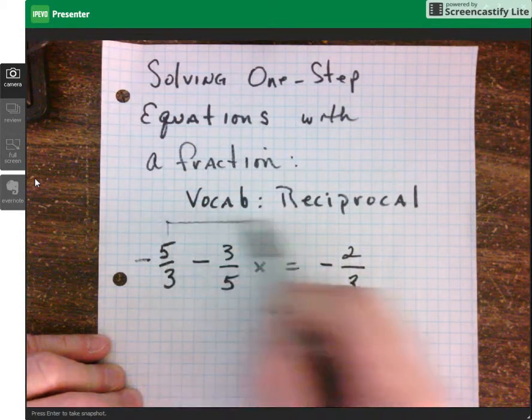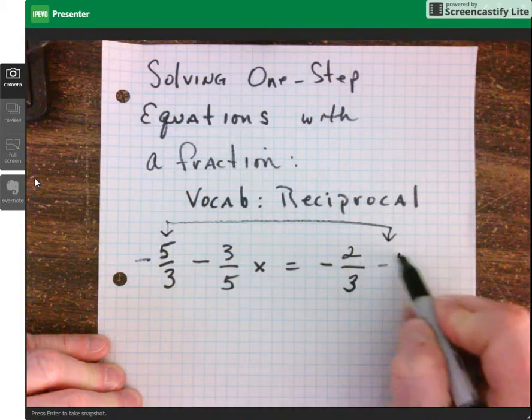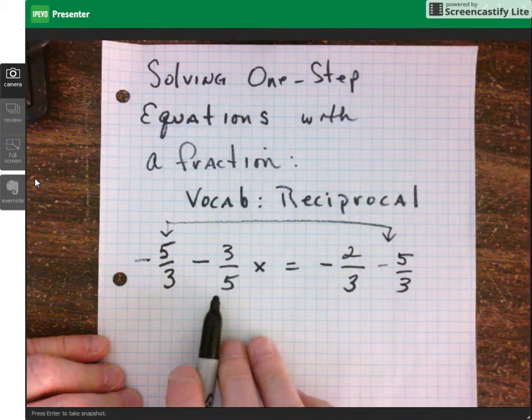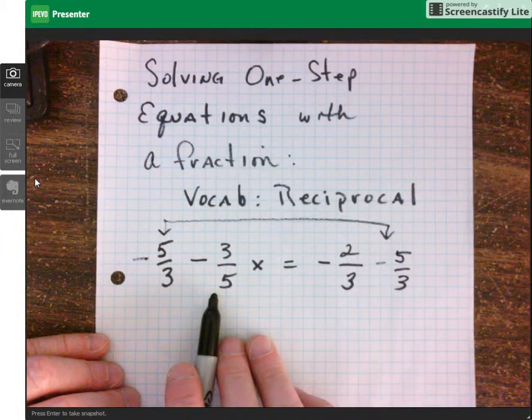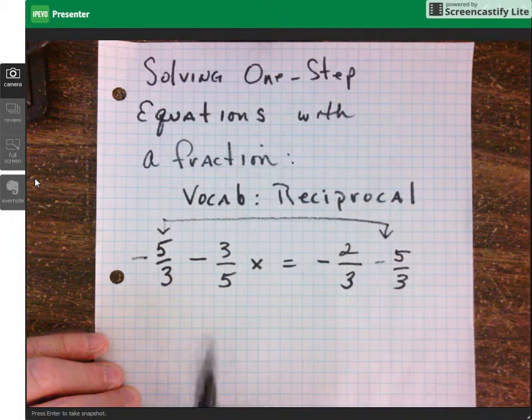Don't forget, whatever you do to one side, you must do to the other. So we are now going to multiply both sides of the equation by negative 5 over 3. 5 over 3, I'm sorry.